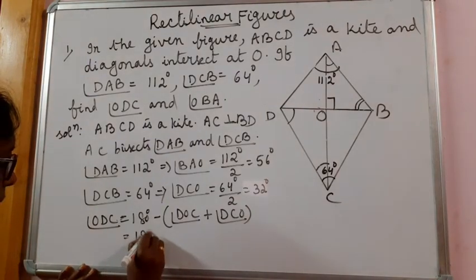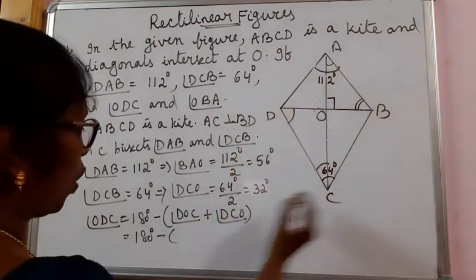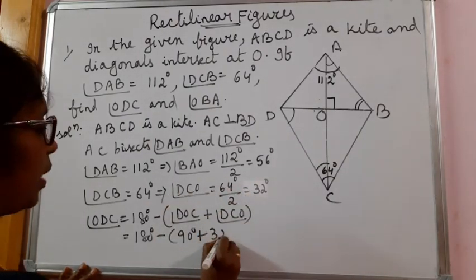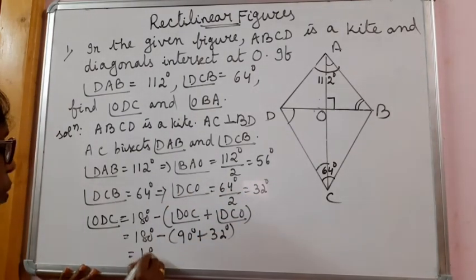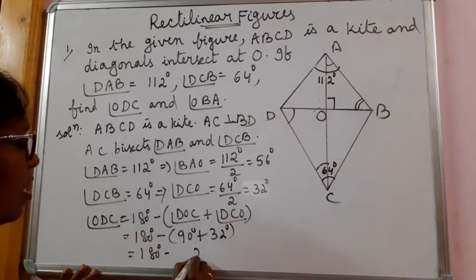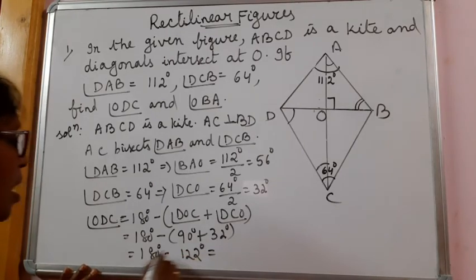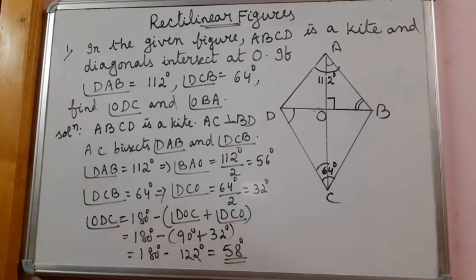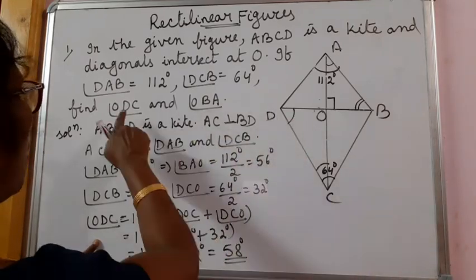Let me do here. 180 degrees minus angle DOC is 90 degrees. Angle DCO is 32 degrees. That gives you 180 minus 122 degrees. If you subtract, you are going to get 58 degrees. So your first answer is 58 degrees, that is angle ODC.